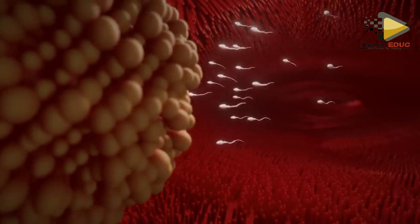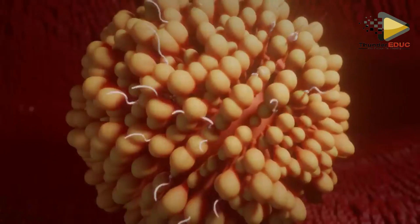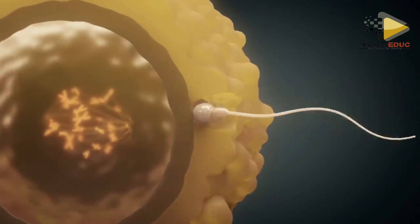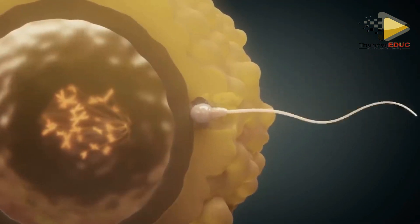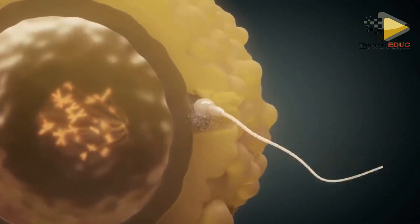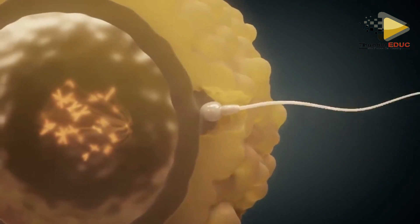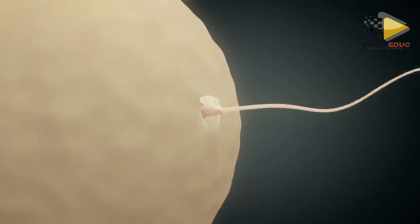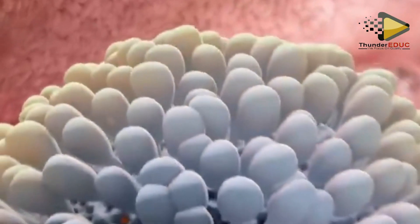When sperms approach the ovum, only one sperm will fertilize the ovum. It uses its head because it contains enzymes which digest the membrane of the ovum for fertilization to occur.